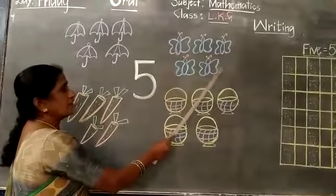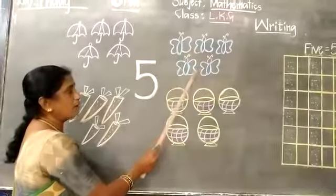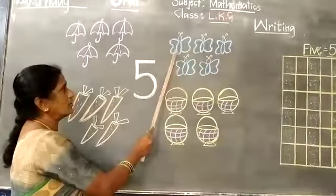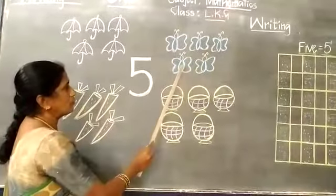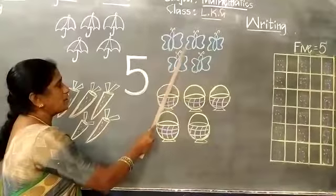How many butterflies are there? There are 5 butterflies. 1, 2, 3, 4, 5. 5 butterflies.